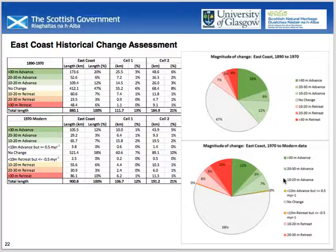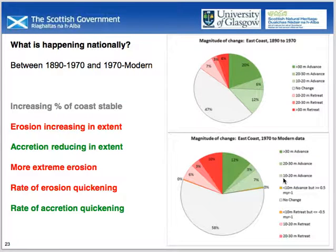Comparing pie charts of how nationally our soft coast has changed — in the early historical period between 1890 and 1970, and then more recently from the 1970s to modern data — we can see how the slices adjust through time. We're still compiling this data, but so far: there's an increasing percentage of the coast becoming stable; erosion is increasing in extent; accretion is reducing in extent; we're getting more extreme erosion; the rates of erosion are quickening; and the rates of accretion are also quickening.